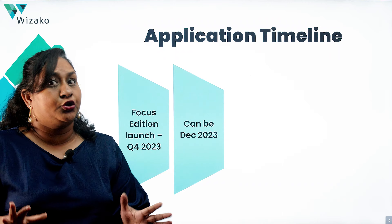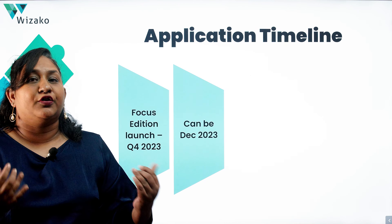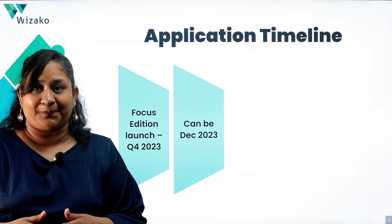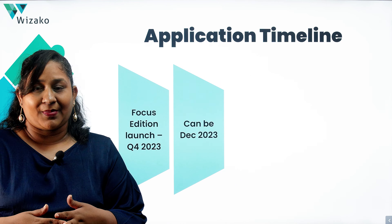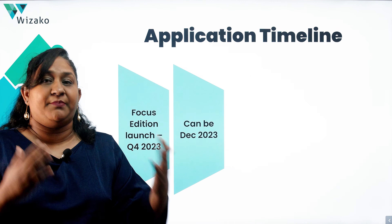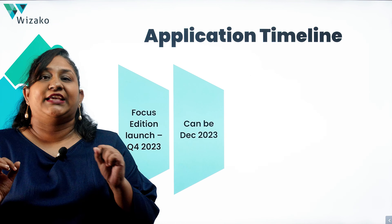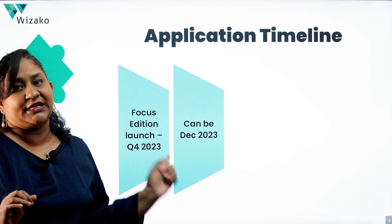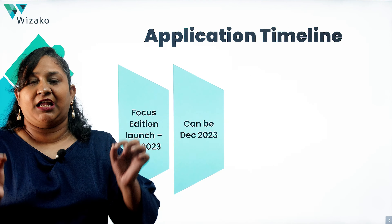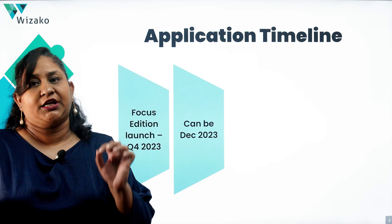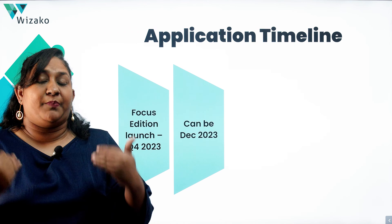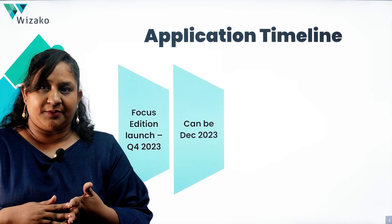However, registration itself starts only at the end of August 2023, so it may very well not be October 2023. Q4 can mean any time up to the last week of December 2023, and there isn't enough information released by mba.com yet for us to guarantee an October release. The timeline is still fluid — it can be anytime in Q4.